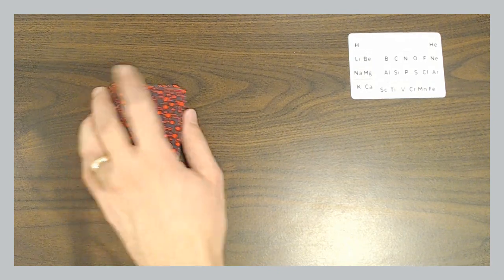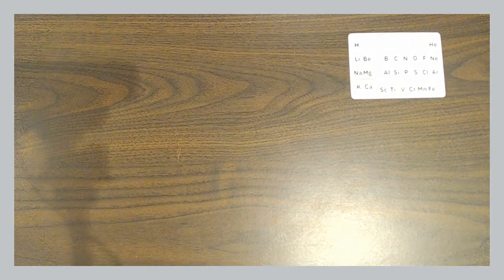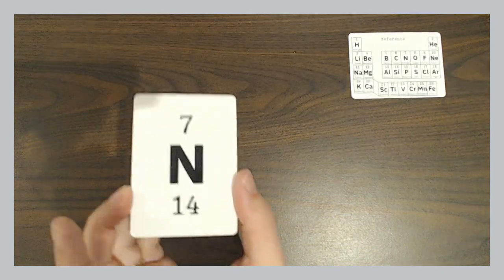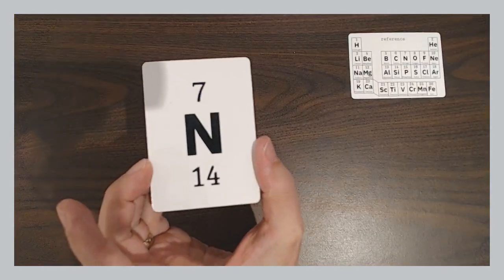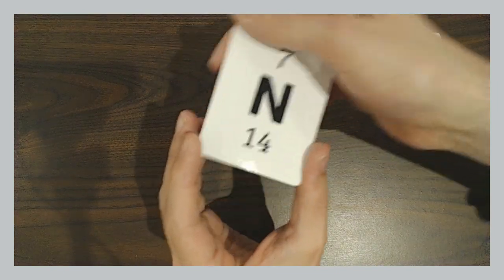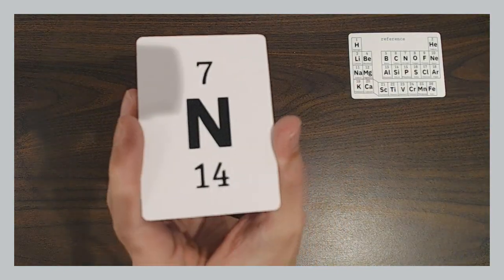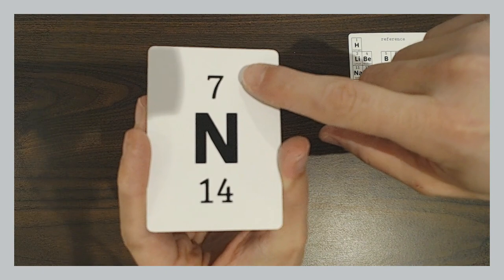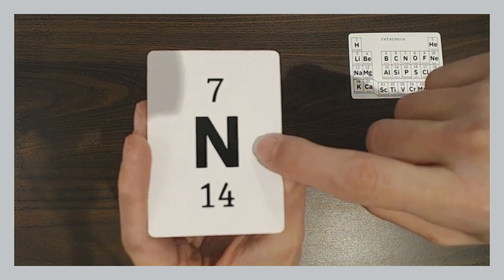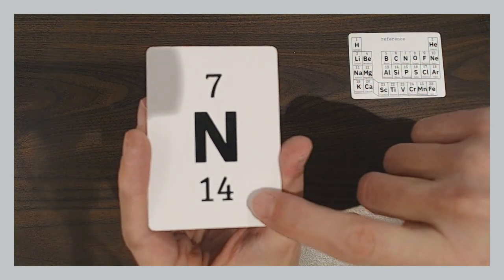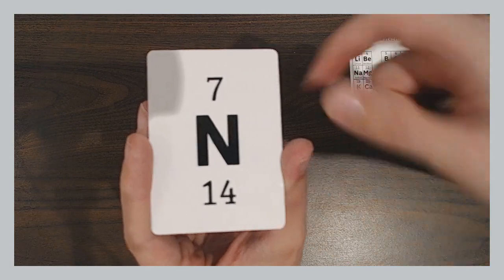So what games can you play? If we look at the cards, every card has three pieces of information on it. You have the atomic number on top, you have the symbol of the element, and then you have the atomic mass on the bottom. For example, this is nitrogen.